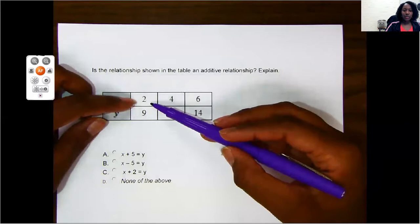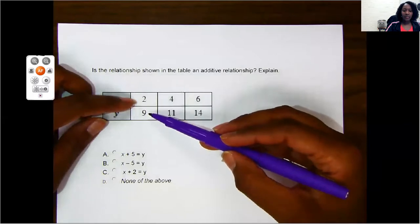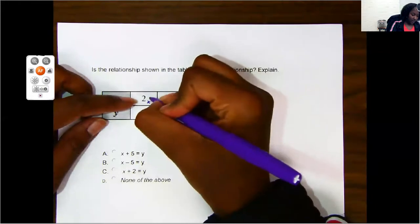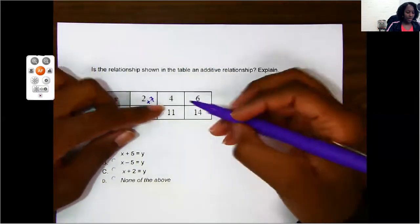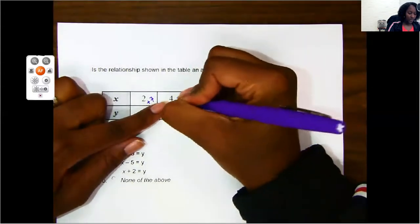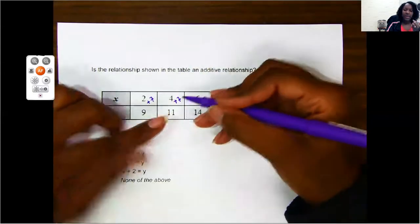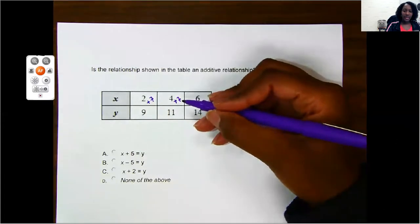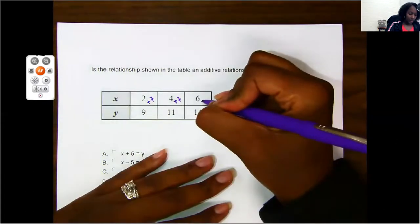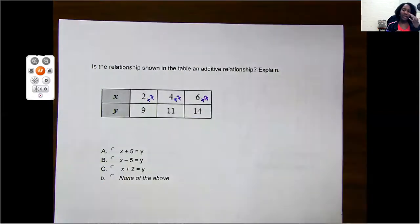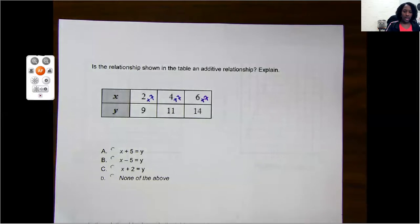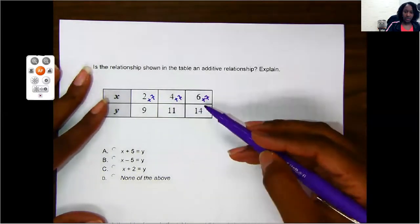So what can I add to 2 to get to 9? If you said 7, I will agree with you. Let's see if it follows that same pattern. Is 4 plus 7, 11? Yes, it is. Is 6 plus 7, 14? 6, 7, 8, 9, 10, 11, 12, 13. Oh, that one didn't work, okay? It looked like plus 7 was going to work, but it didn't, it wasn't true for the last one.